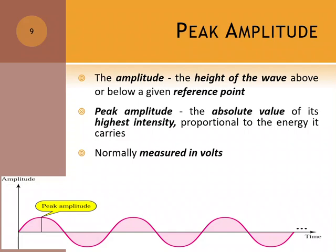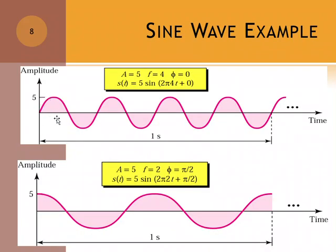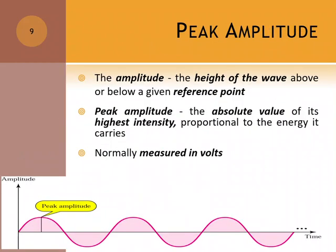So the height measured from the reference point upward or downward is the amplitude. If upward is positive five, downward is minus five. That is amplitude, normally measured in volts.